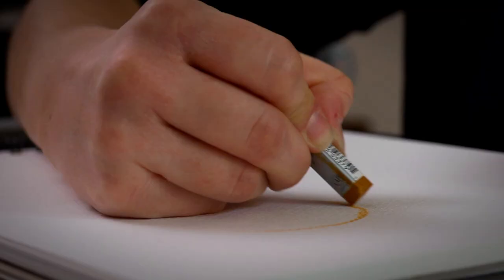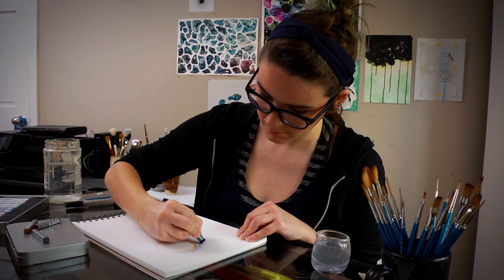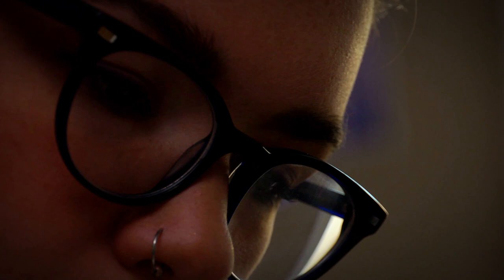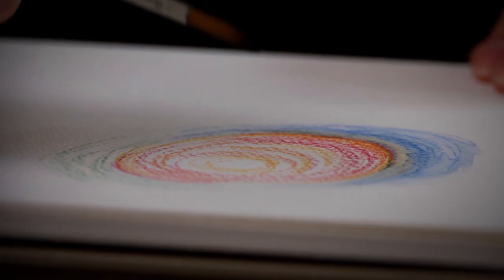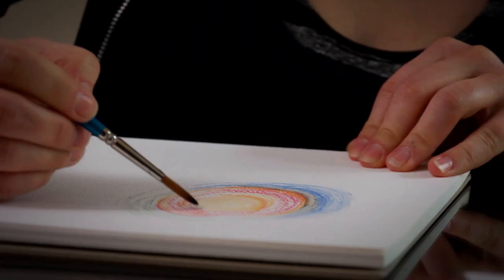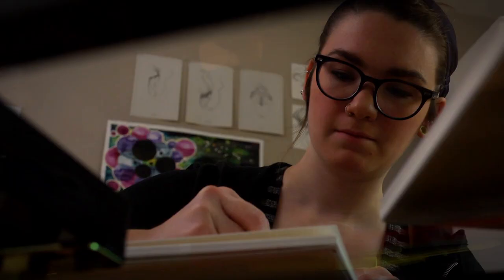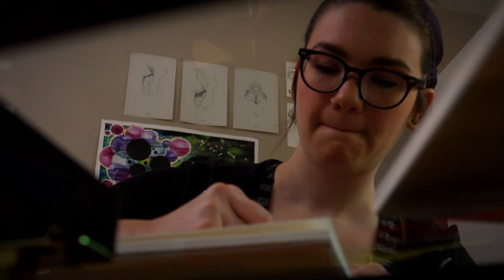So the Winsor & Newton watercolor sticks, they remind me of a hybrid between a water-soluble crayon and the pan sets of watercolors. You can either wet your brush and take it straight to the stick and just paint from that, or you can take it directly to the paper, draw whatever you want on the paper, and then re-wet it with a brush, or you could wet your paper first and then draw with it and you'll get a similar effect.